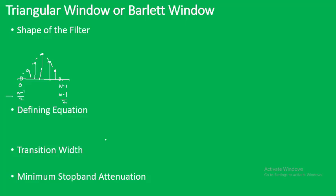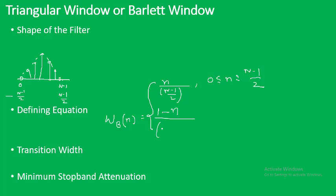This triangular window is also known as the Bartlett window. Its defining equation is: w_B(n) = n / ((N−1)/2) for n ranging from 0 to (N−1)/2, and w_B(n) = 1 − n / ((N−1)/2) for n ranging from (N−1)/2 to N−1.